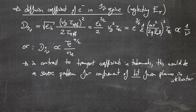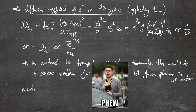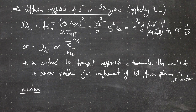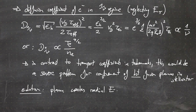However, there is a simple solution: the plasma creates a radial electric field to counteract the transport losses. This is precisely the radial electric field we already talked about earlier.